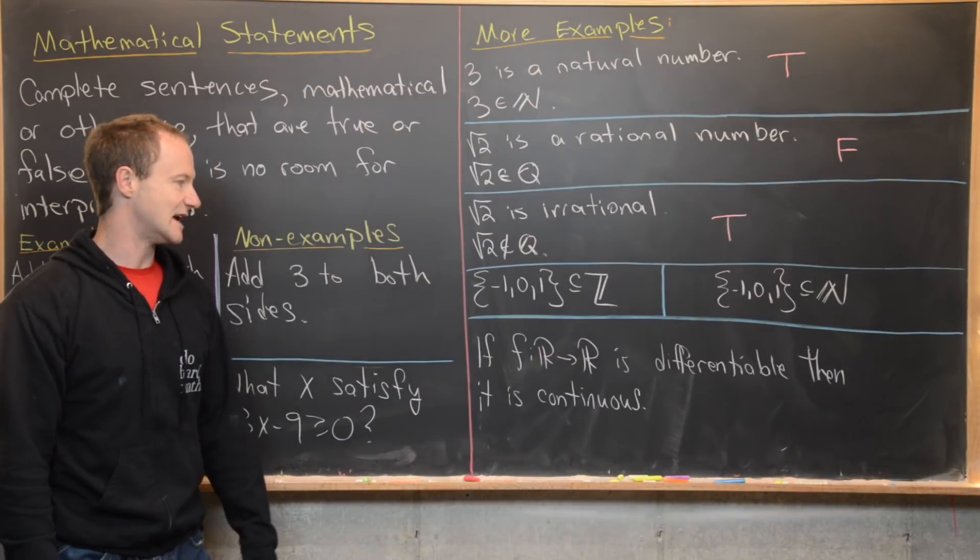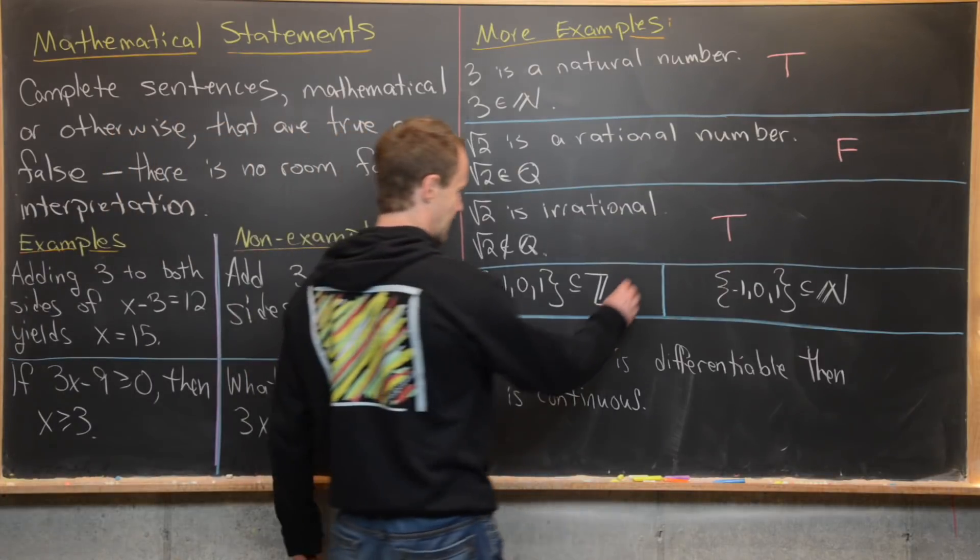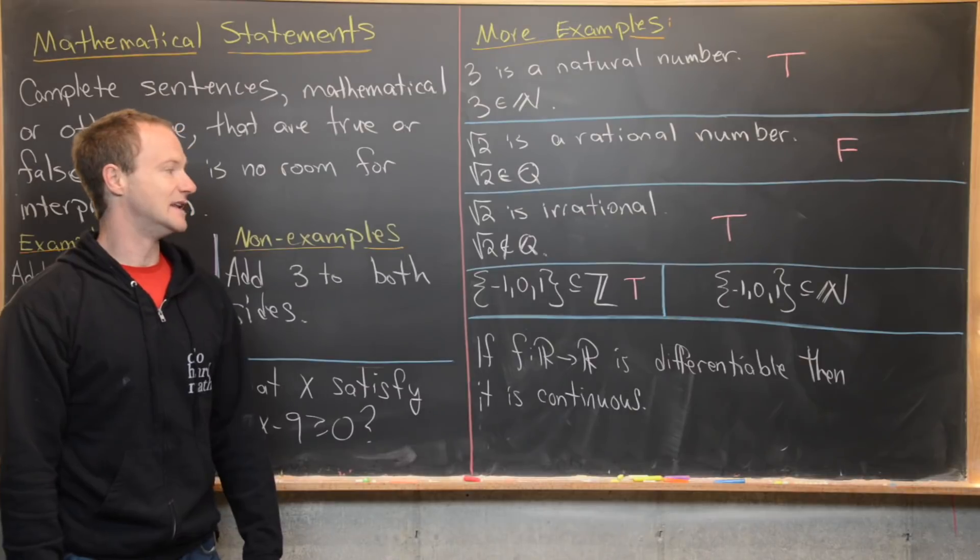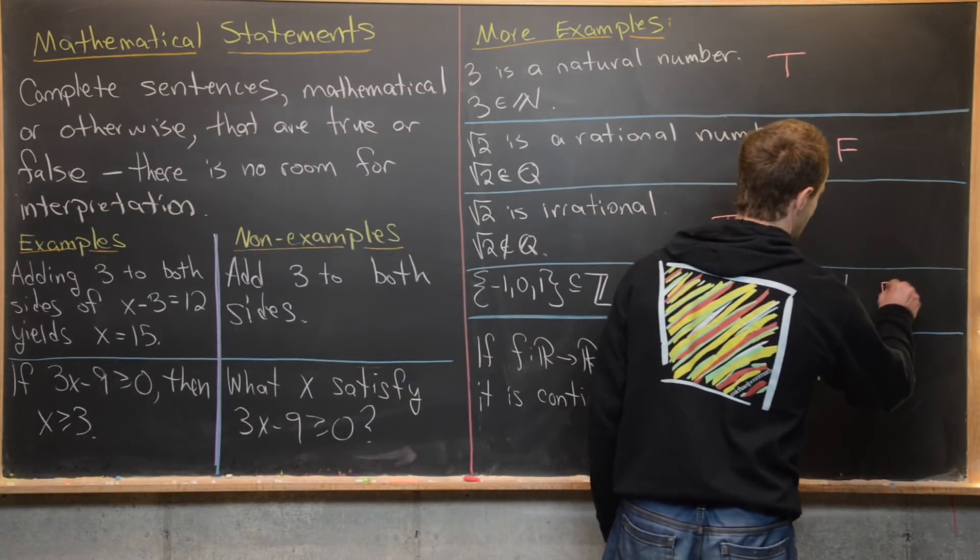Here we have the set containing negative one, zero, and one is a subset of the integers. That is true. Then we have the set containing negative one, zero, and one is a subset of the natural numbers. That is false.